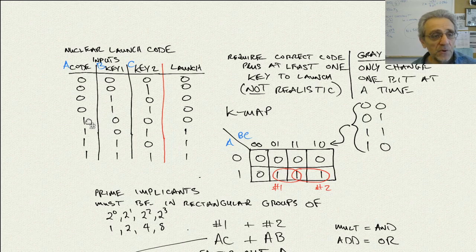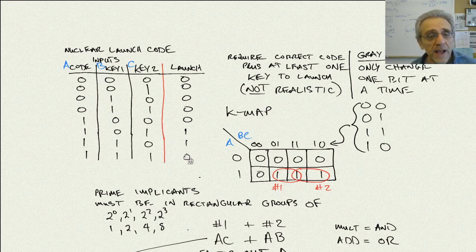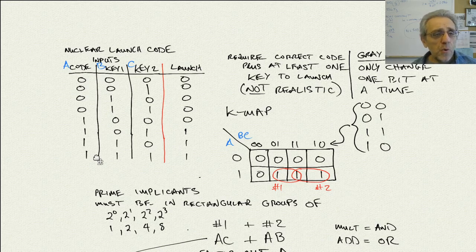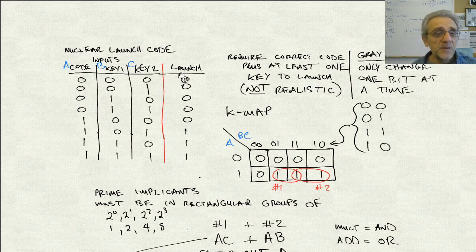If the codes are right and none of them turn their key, nothing happens, but if one of them turns their key, then it does launch. So we're now going to create the Karnaugh map for this over on the right. I go through each row on the table and make the K-map A/BC — A for the code, and B and C are the two keys — then simply copy the output with the correct input.